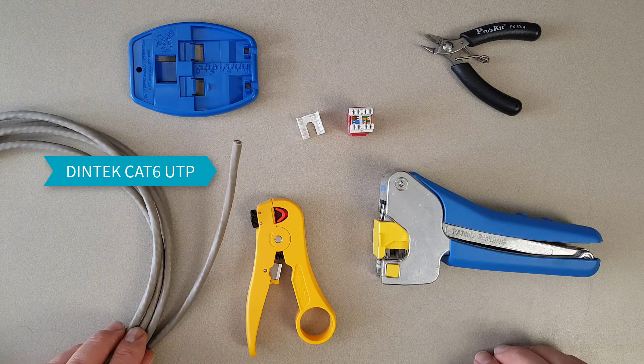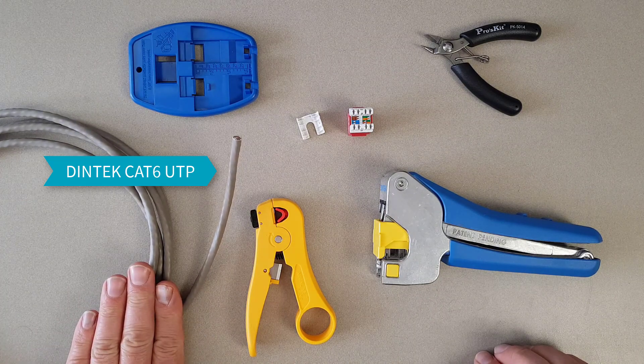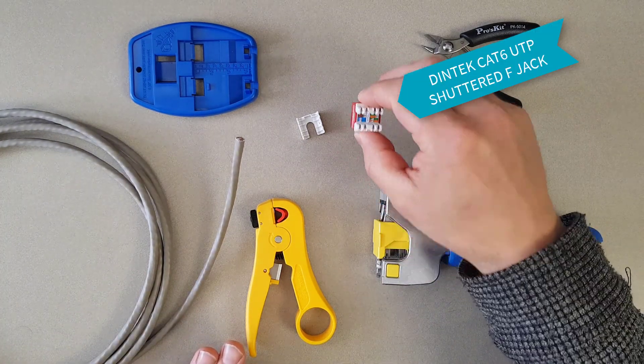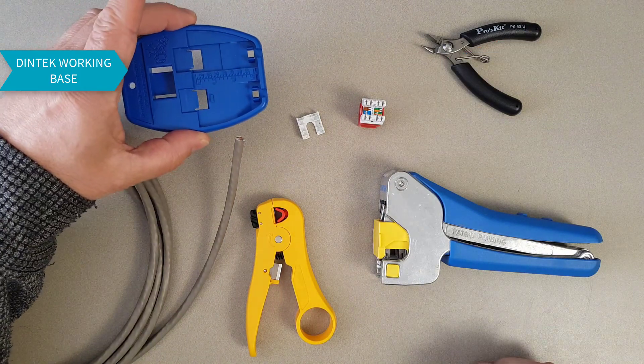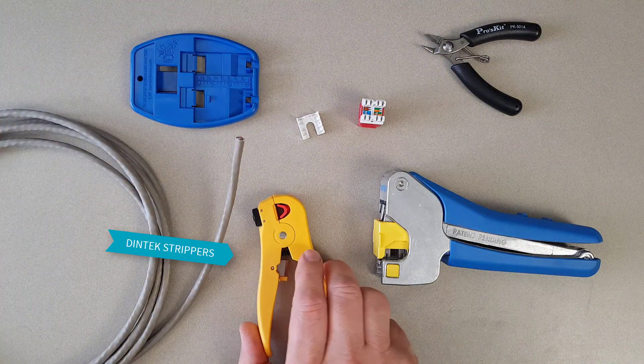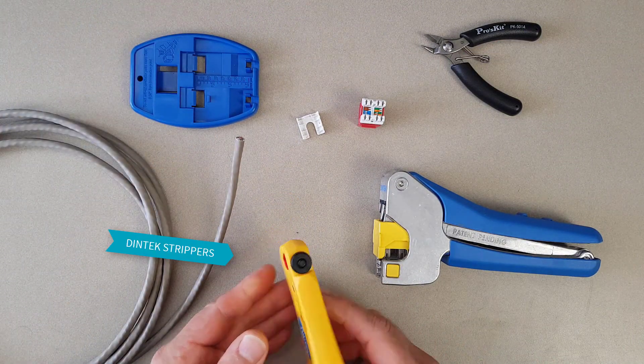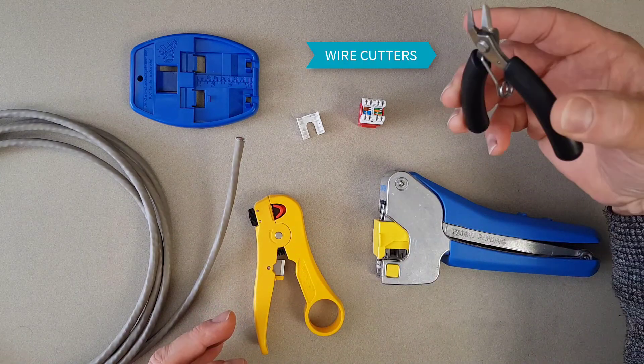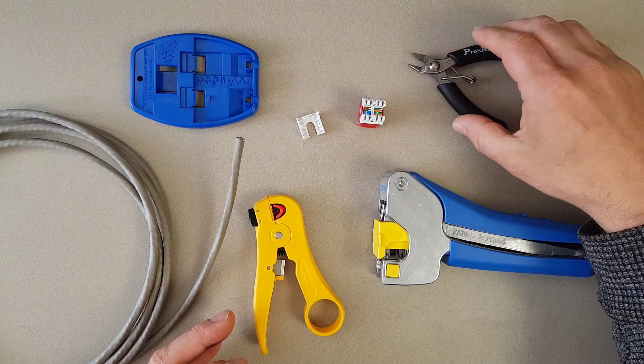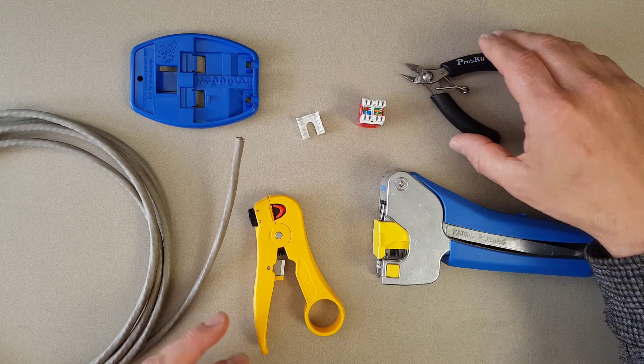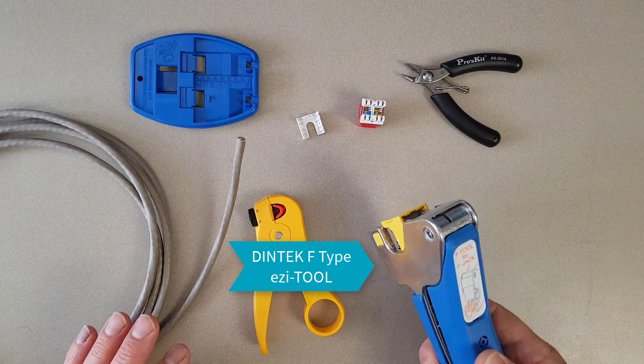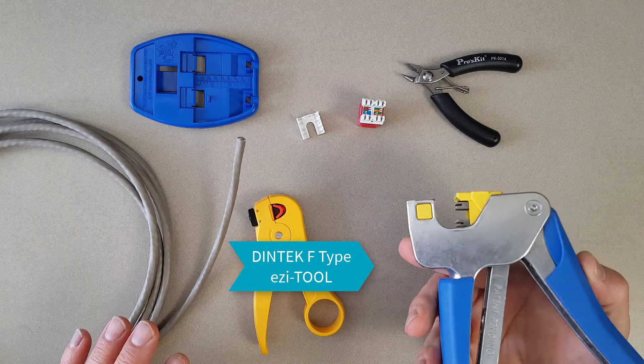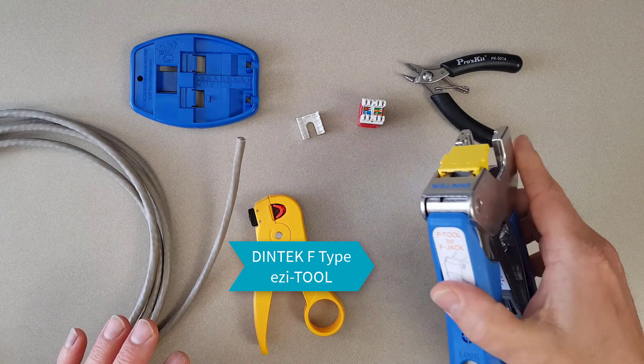So what we're going to need for this is obviously our CAT6 UTP cable, our F jack, the Dintech working base, the Dintech strippers, cutters for cutting off the stripping cloth and the central spacer inside the cable, and we're going to be using the 180 degree or F style easy tool.